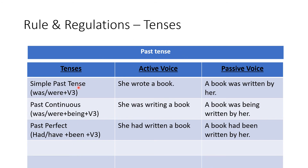Past tense: in simple past, use was/were + V3. She wrote a book — A book was written by her. In past continuous: She was writing a book — A book was being written by her. In past perfect: She had written a book — A book had been written by her. Change the sentence into its past passive form by adding the third form of the verb.